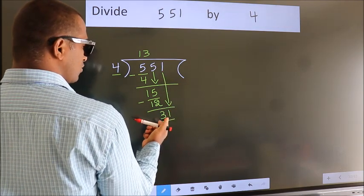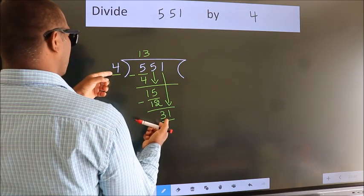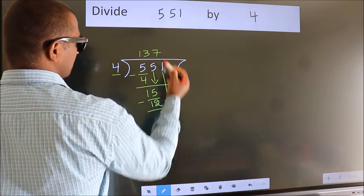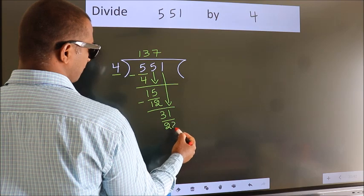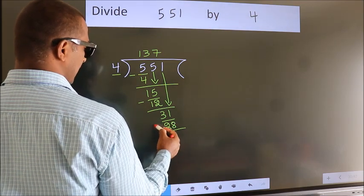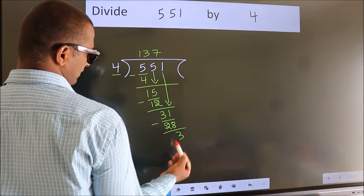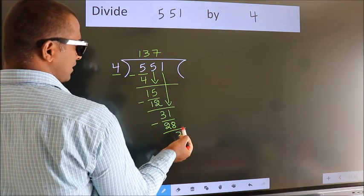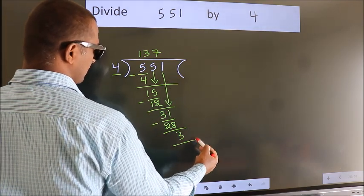A number close to 31 in the 4 times table is 4 sevens 28. Now we subtract — we get 3. No more numbers to bring down, so we stop here.